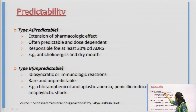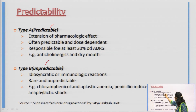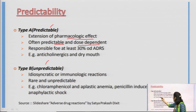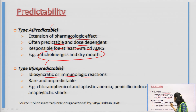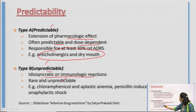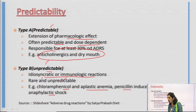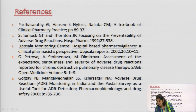Predictability is classified as Type A or Type B. Type A ADRs are predictable — they are extensions of the pharmacological effect of the drug, dose-dependent, and expected. For example, anticholinergics causing dry mouth. Type B ADRs are unpredictable — they are idiosyncratic or immunological reactions, rare and unexpected. Examples include chloramphenicol causing aplastic anemia, and penicillin causing anaphylactic shock.